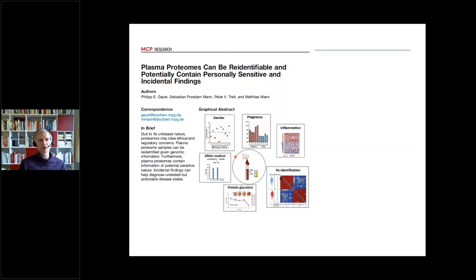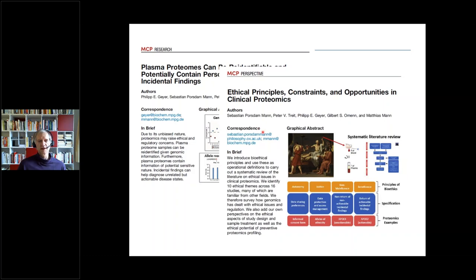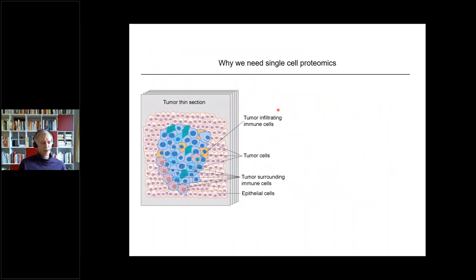Something we ran into that affected me more than I expected: we're running square into GDPR issues. We've done research on this — is the plasma proteome something that should be regulated similarly to the genome? Because we've just published that you could actually be identified in certain circumstances by the plasma proteome, and we need to consider how to handle this. There are two papers on this if you're interested. It's also a family matter here, with Sebastian, a bioethicist at Oxford, involved.